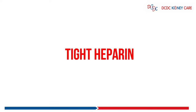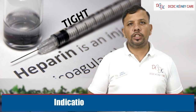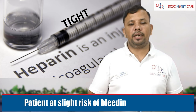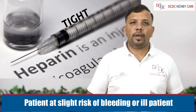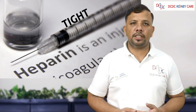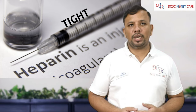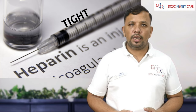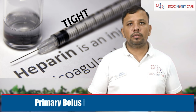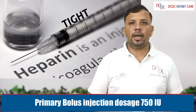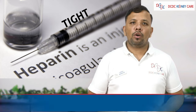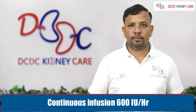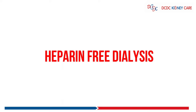Regarding tight heparin: the indications are patients who have a risk of slight bleeding, or patients for whom heparin-free dialysis was attempted but was unsuccessful due to clotting. The dosage is a primary bolus dose of 750 IU, with a continuous infusion of 600 IU per hour.